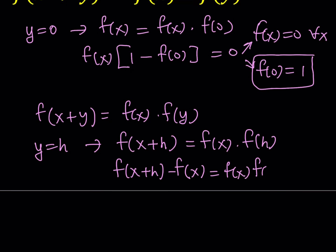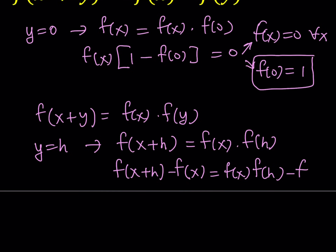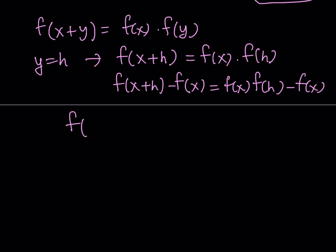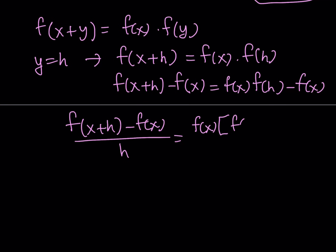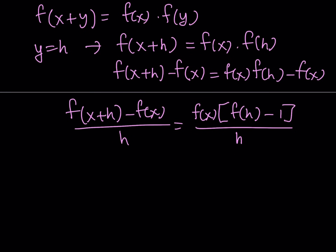So I can make the left-hand side look like f of x plus h minus f of x divided by h — that's my next step, dividing both sides by h. On the right-hand side I can factor out f of x, and that gives me f of h minus 1 all over h.